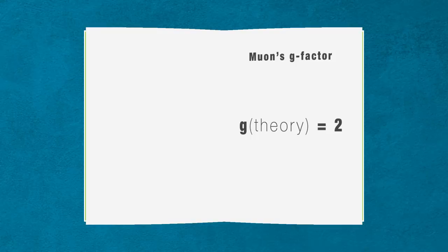Scientific theories initially predicted that the muon should have a g-factor equal to exactly 2. But it wasn't so simple.